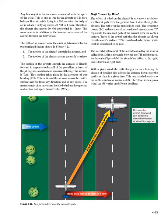Drift caused by wind: the effect of wind on the aircraft is to cause it to follow a different path over the ground than through the airmass. The path over the ground is its track. True course (TC) represents the intended path over the earth's surface, while track is the actual path flown. TC is considered future; track is considered past. The lateral displacement caused by wind is called drift — the angle between the TH and the track. As shown in Figure 4-24, the aircraft has drifted to the right — right drift.